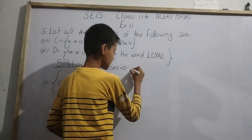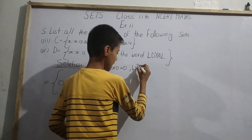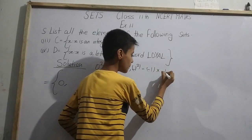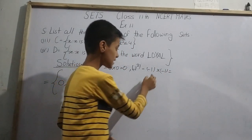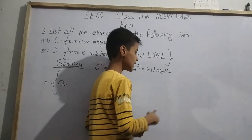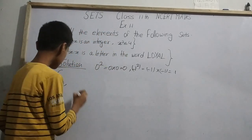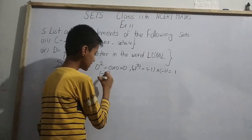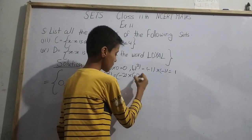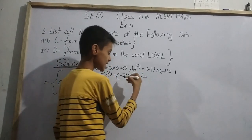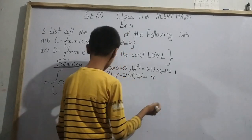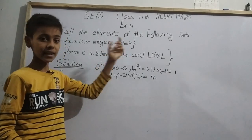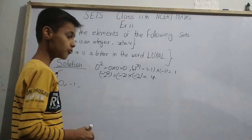Let us start from the negatives. For -1: (-1)² = (-1) × (-1) = 1, which is less than 4. So -1 can be written in the set. Next, for -2: (-2)² = (-2) × (-2) = 4. As we know, x² can be equal to 4, so -2 is also included since 4 equals 4.